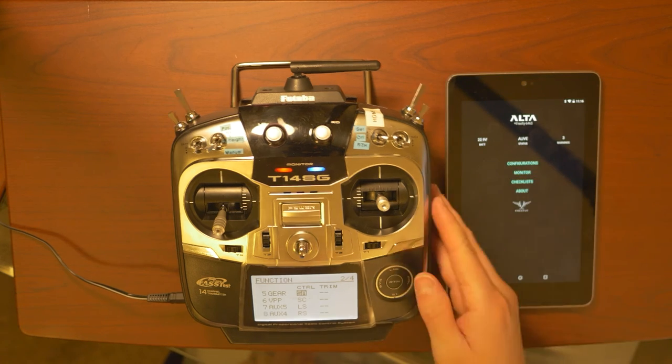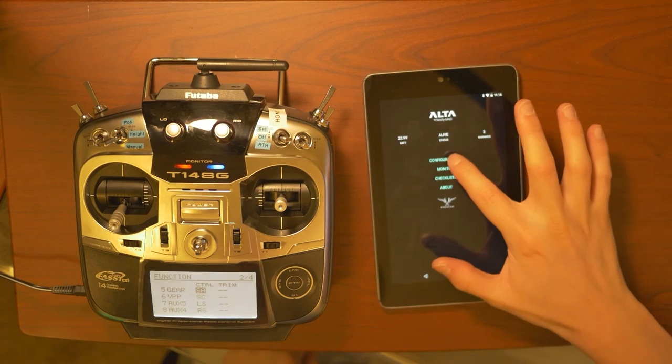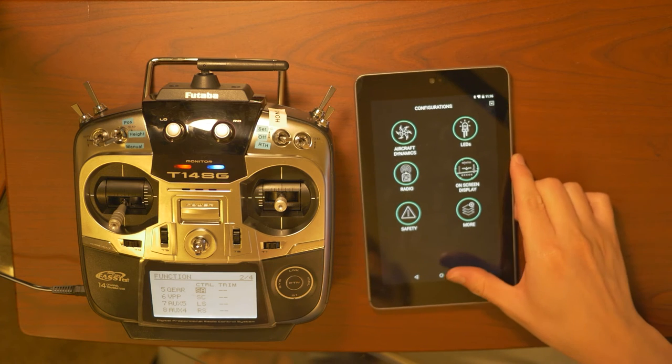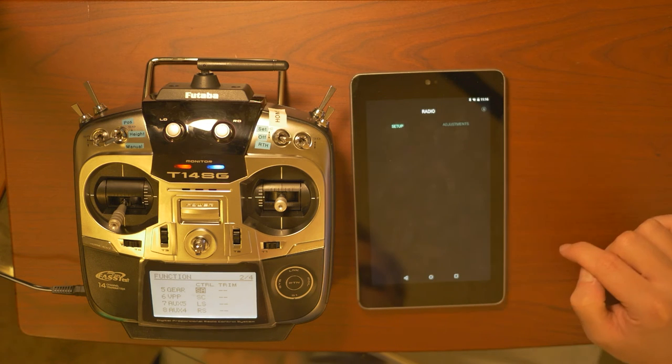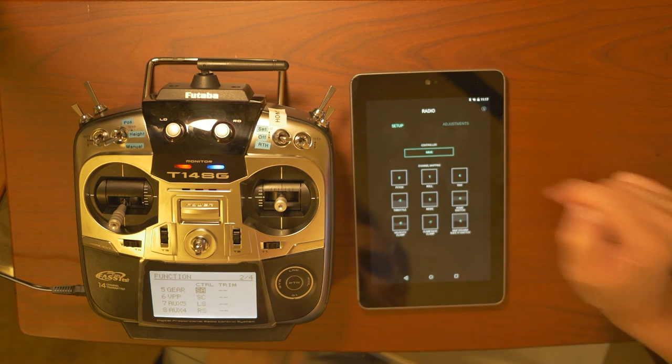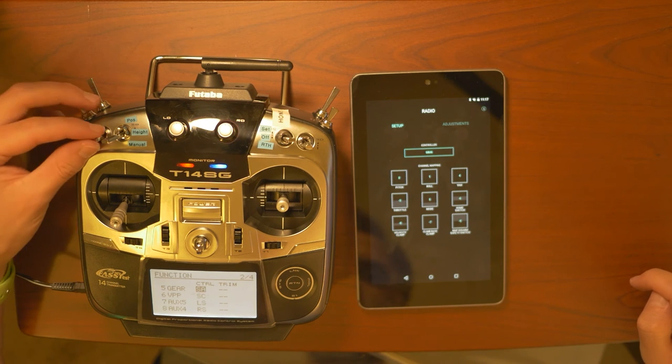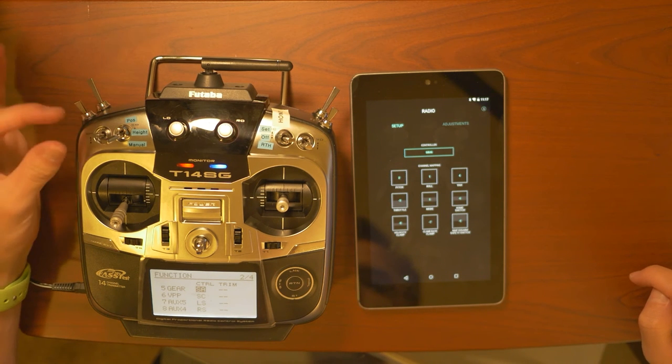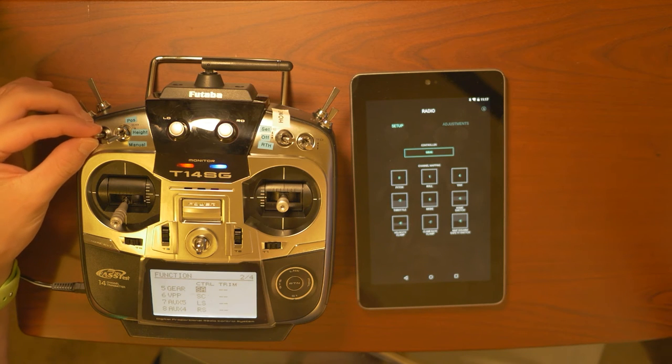And if you come here to the Alta app, you can see that those changes have been made. If you go to configurations, radio, mode is switch 5. Now you can see that when I switch that switch, mode is switching for us.